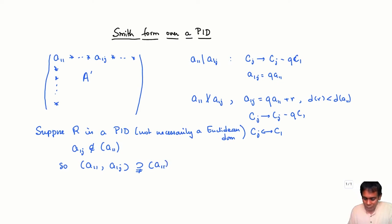On the other hand, we are working in a principal ideal ring. So this ideal is generated by a single element. So let r be such that r actually generates a_11 and a_1j.